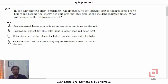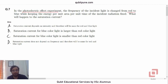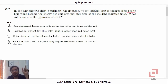Let's read the statement. In the photoelectric effect experiment, the frequency of the incident light is changed from red to blue while keeping the energy per unit area per unit time of the incident radiation fixed.